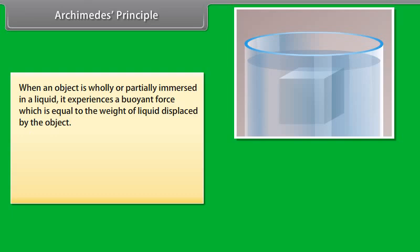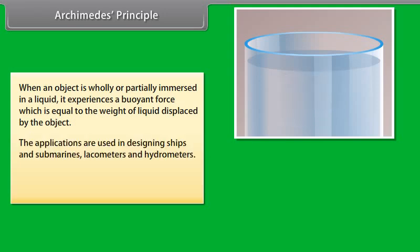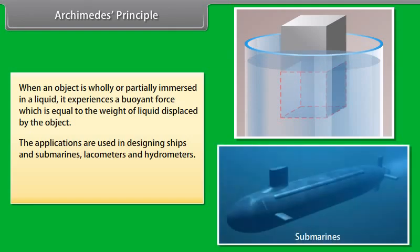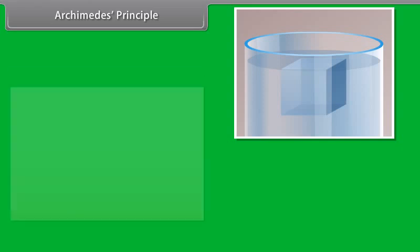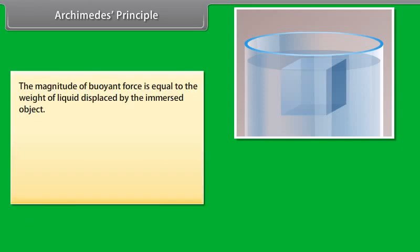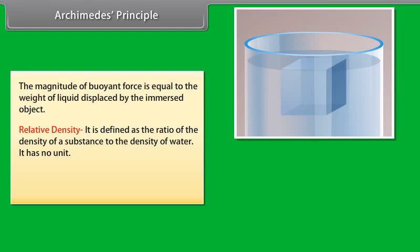Archimedes' principle: when an object is wholly or partially immersed in a liquid, it experiences a buoyant force equal to the weight of the liquid displaced by the object. Applications include designing ships, submarines, lactometers, and hydrometers. Relative density is defined as the ratio of the density of a substance to the density of water; it has no unit. Relative density = density of substance / density of water.